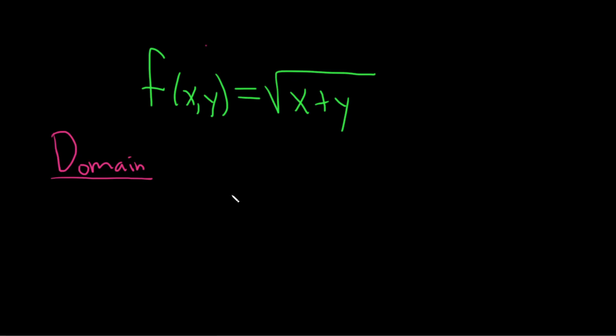The domain of this function is the set of all inputs, and they are ordered pairs x comma y. This has to make sense, and in order for this to make sense, x plus y has to be greater than or equal to 0. We have x plus y greater than or equal to 0 because we can't take the square root of a negative number, so this has to be 0 or positive.